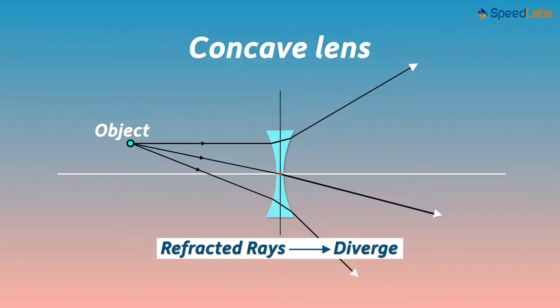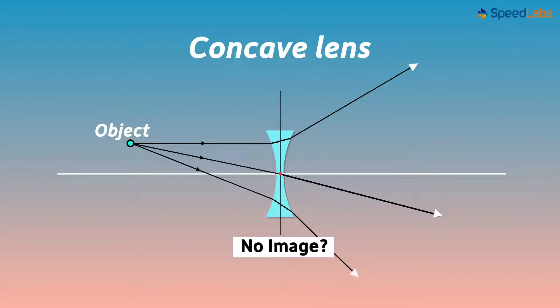But wait! Since they do not intersect at a common point, does that mean no image is formed? Well, the image is formed. If we were to extend all these rays backward, they all meet at this point. The virtual image is formed at this point.